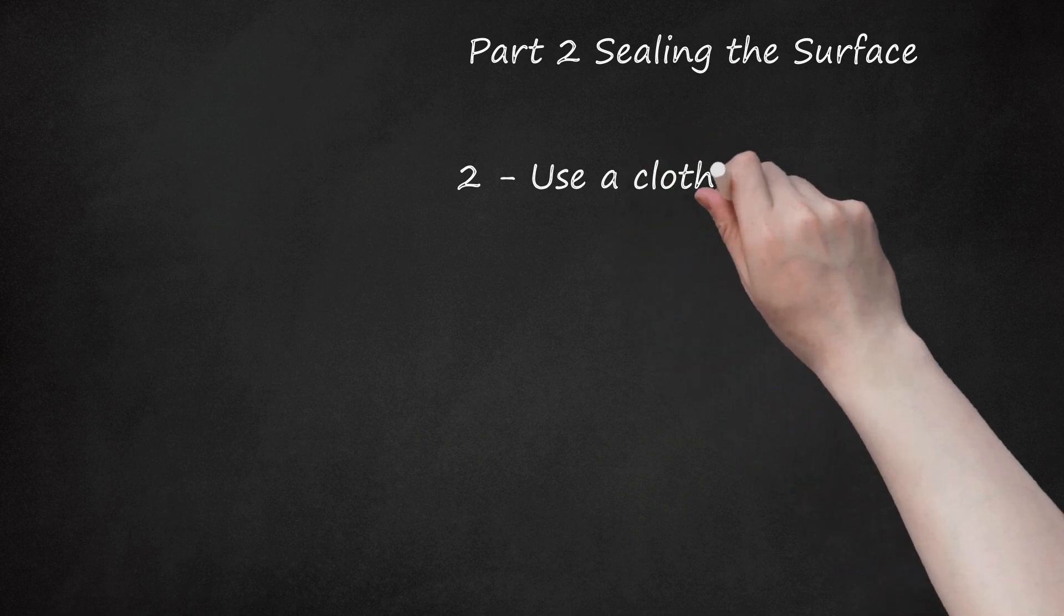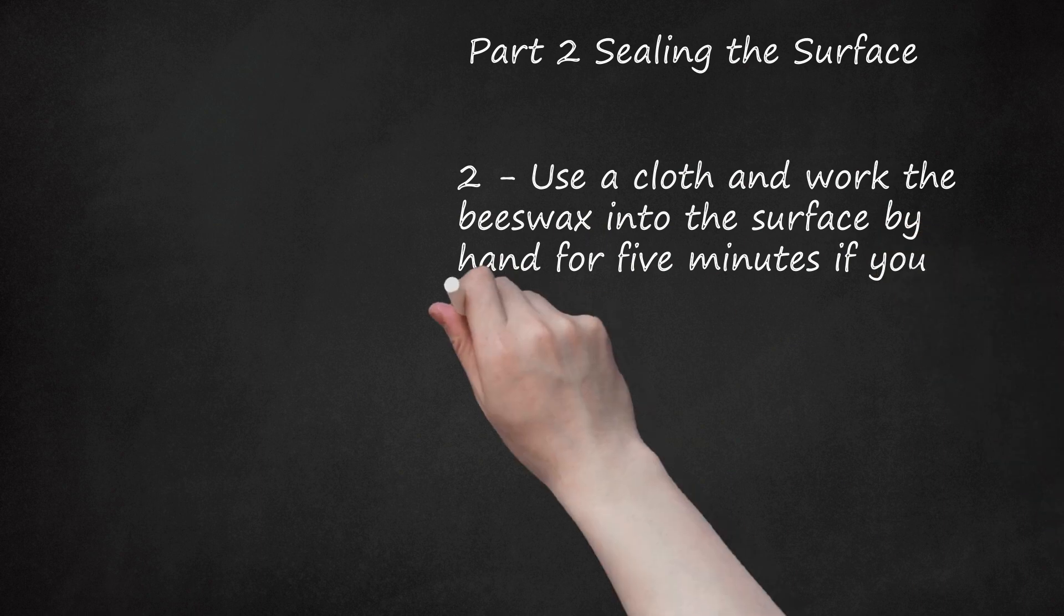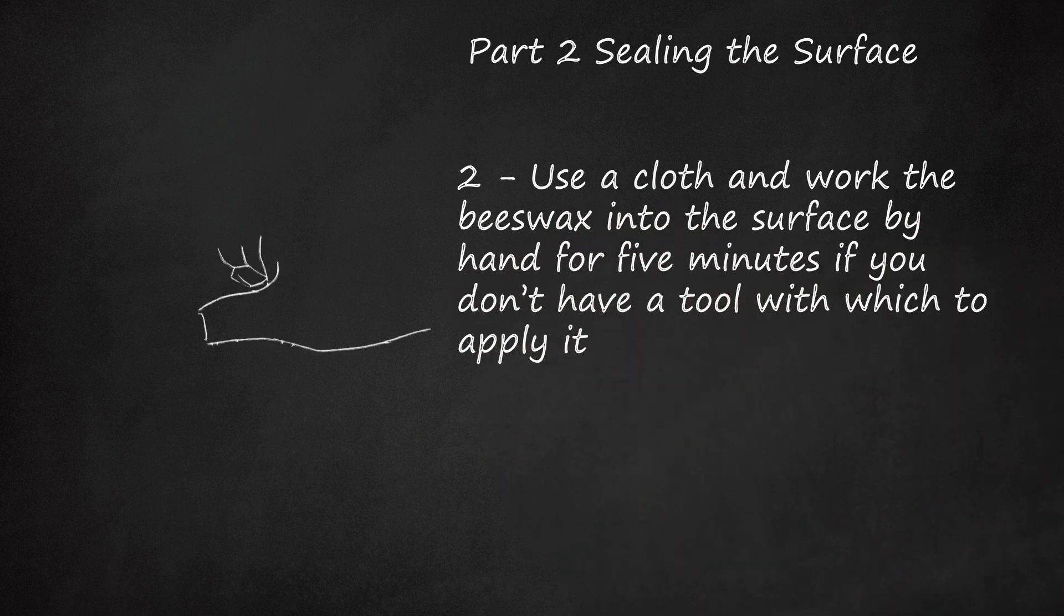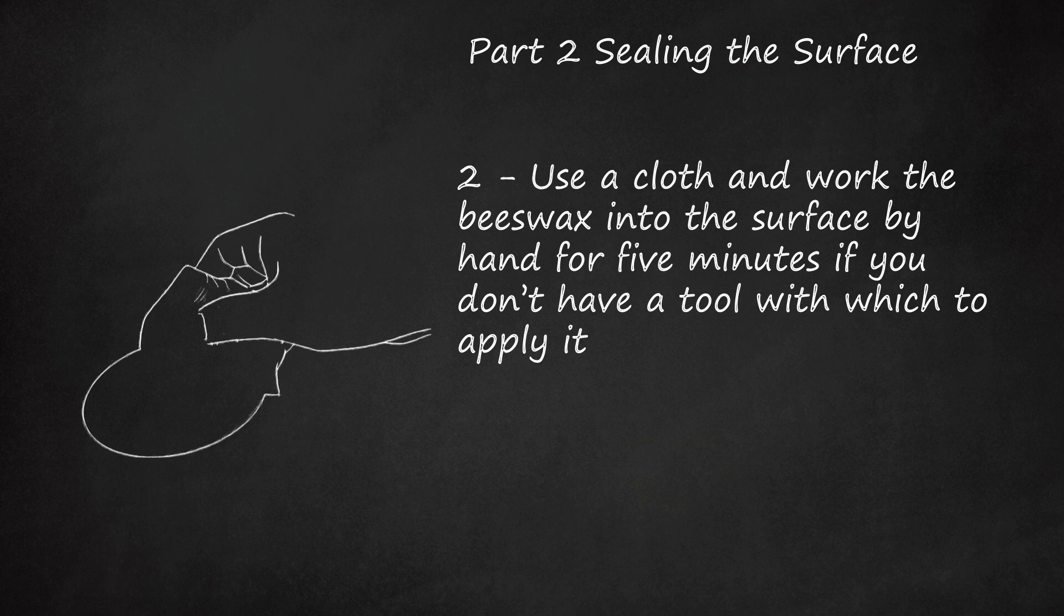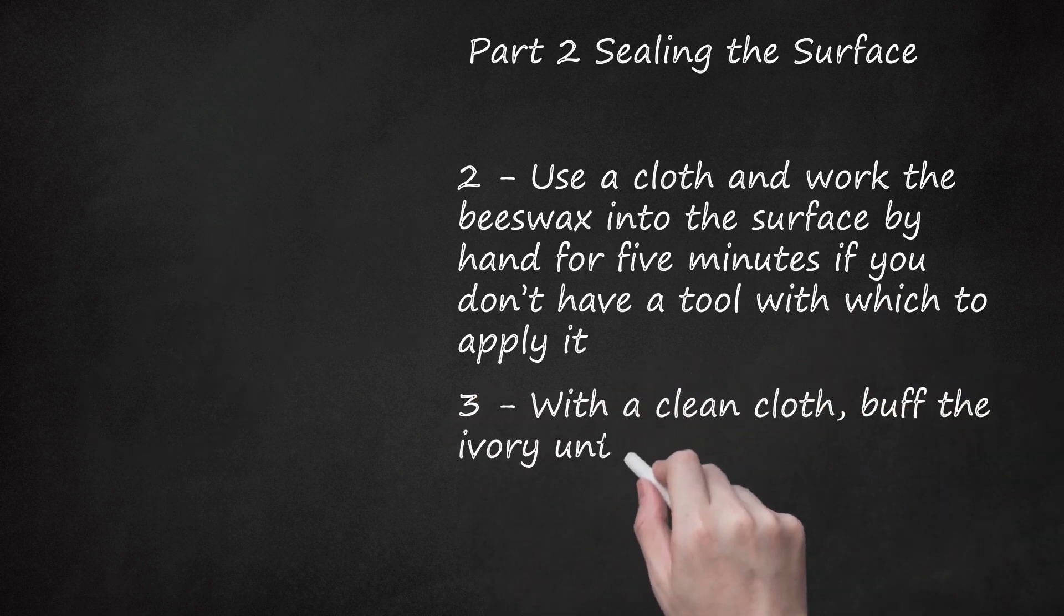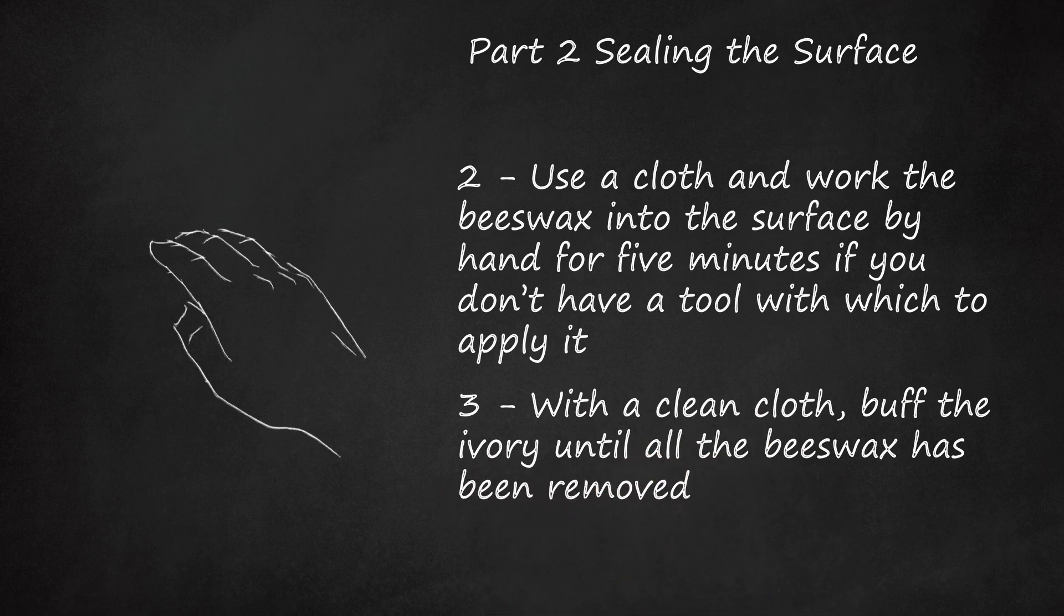Use a cloth and work the beeswax into the surface by hand for 5 minutes if you don't have a tool with which to apply it. Rub the wax cloth over and over against the ivory until it has a uniform surface. With a clean cloth, buff the ivory until all the beeswax has been removed. The ivory should look shiny but not feel very waxy. Set the beeswax cloth aside, since you will need it later.